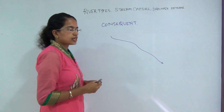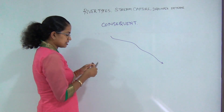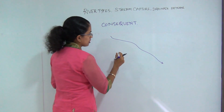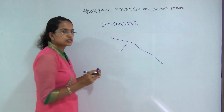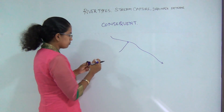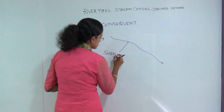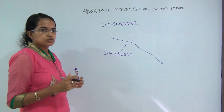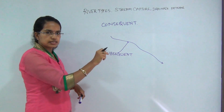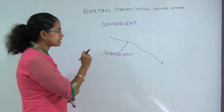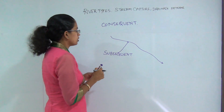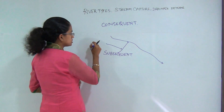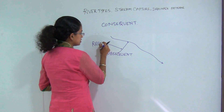The rivers which are formed later as a result of headward erosion and which join the main stream along the weaker axis — kind of perpendicular to the main stream — would be the subsequent streams. The streams running parallel to the main stream but as minor tributaries, as compared to the consequent streams, would be the resequent streams, and these join into the subsequent streams.